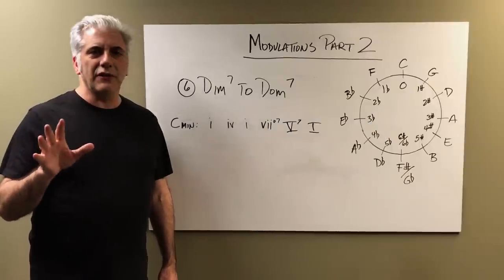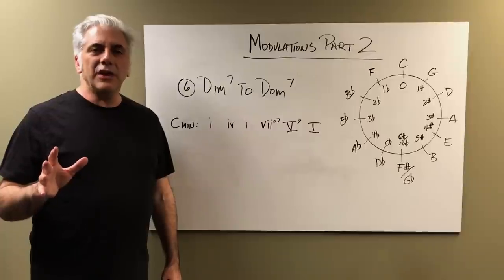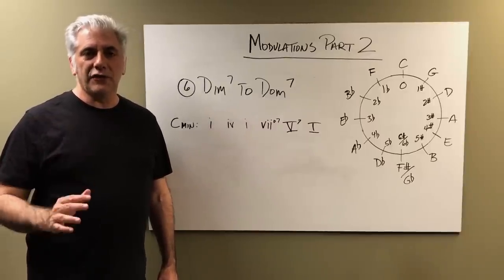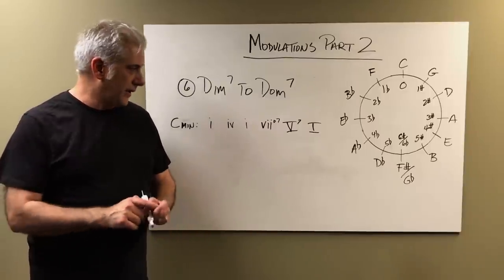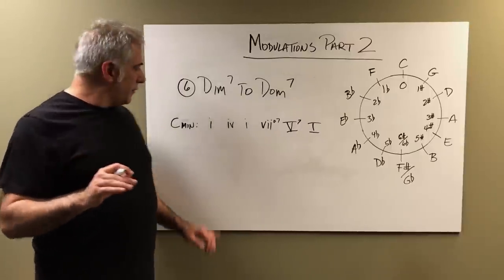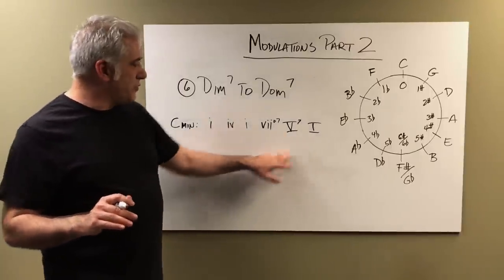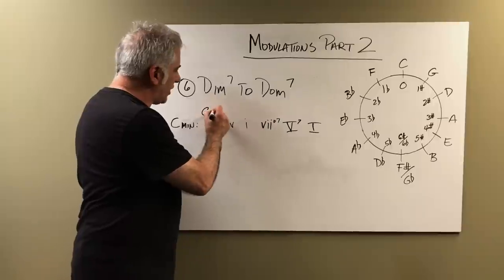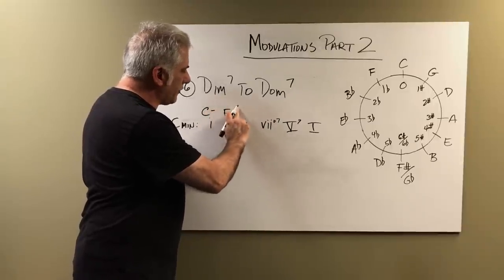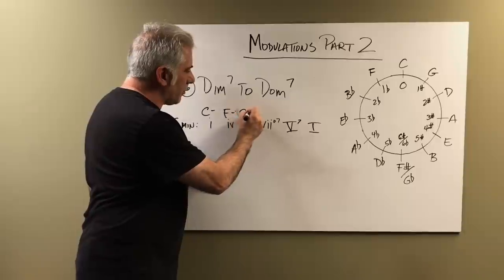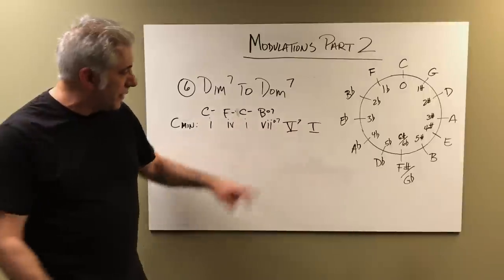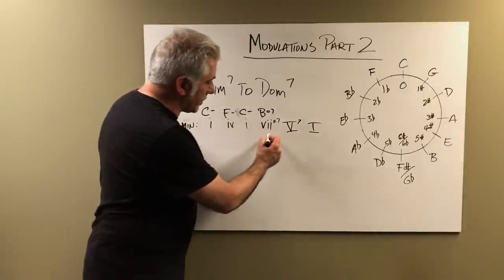This is actually kind of a simple one. If you take any diminished seventh chord and lower the root of it down a half step, it becomes a dominant seventh. We're going to use that in order to modulate from the key of C minor to the key of E flat major. So I'm going to show you this. You get C minor, F minor is the four chord, C minor back to the one chord, and B diminished seven is the seven chord. This is our transition chord — this is where the modulation happens.